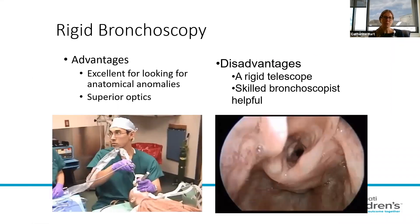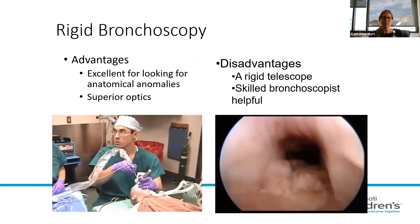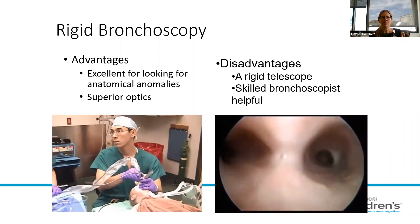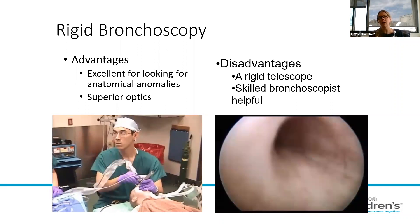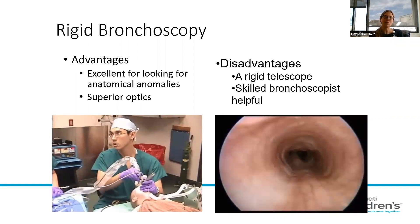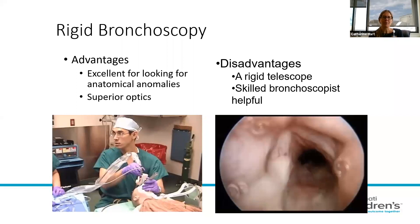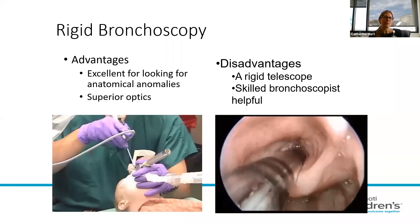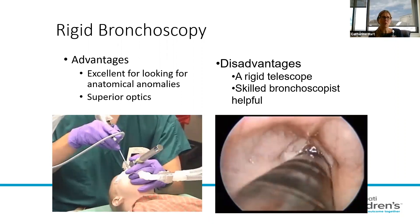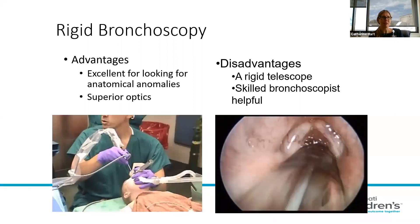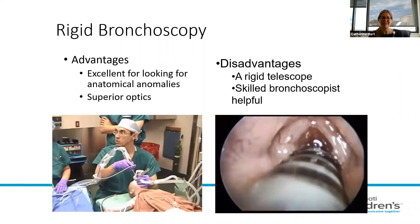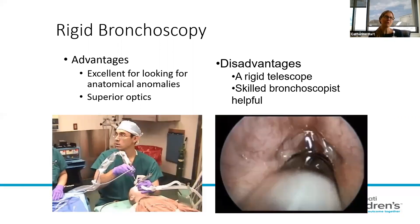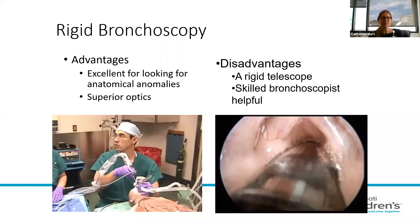Rigid bronchoscopy is typically what ENTs do, at least at Cincinnati — the division varies by institution. Rigid bronchoscopy has the advantage of being really able to look for anatomic anomalies, particularly related to aspiration, that you may not see as easily on flexible bronchoscopy. The disadvantage is that the telescope is rigid — it doesn't bend — which can limit its usefulness and requires considerable skill to do effectively.